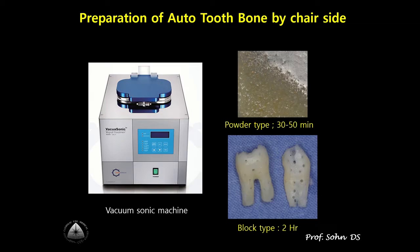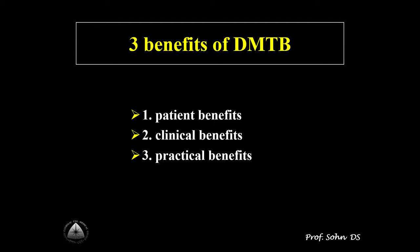Generally speaking, it takes 30 to 50 minutes for preparation of particulate tooth bone grafts — from cleaning, sterilization, and decalcification. It takes two hours to prepare tooth block bone in a vacuum sonic machine chairside.